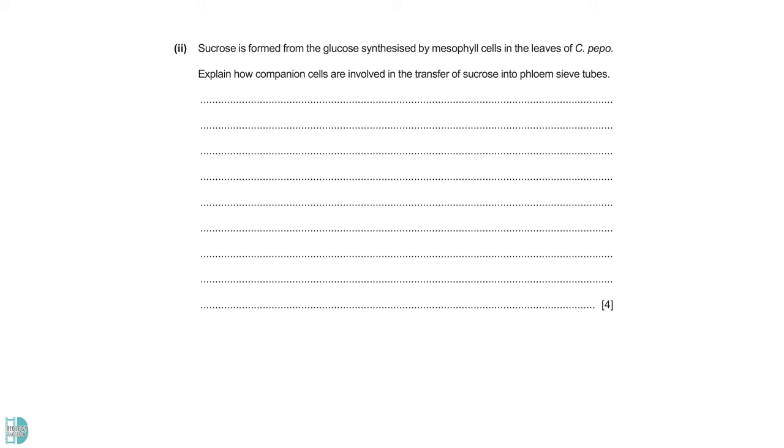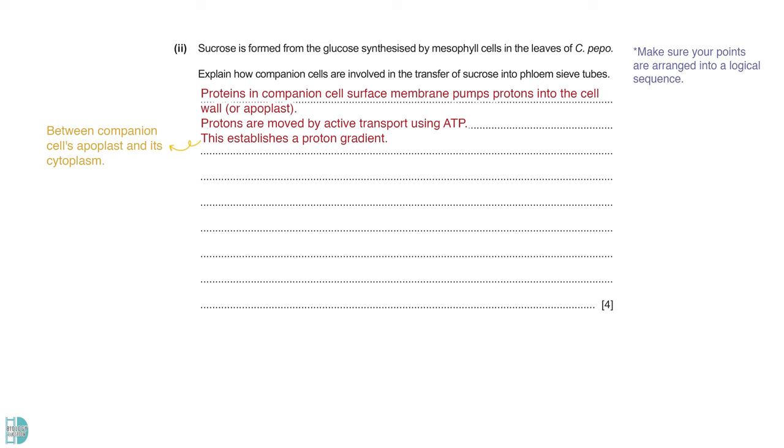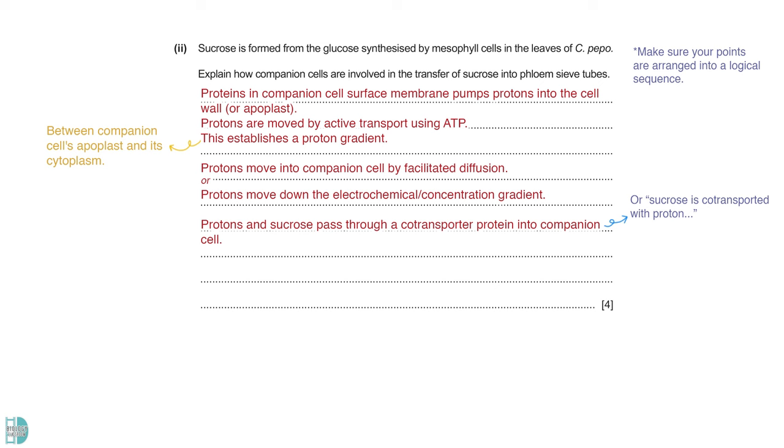Question 2. Explain how companion cells are involved in the transfer of sucrose into phloem sieve tubes. You need to explain how the loading of sucrose takes place with the help of the companion cell. Make sure the points are arranged in a correct sequence. Protons are actively transported out of the companion cells into the apoplast. This step requires ATP as it is active transport. It will establish a proton gradient between the companion cells, apoplast and cytoplasm. Due to the concentration or electrochemical gradient, protons move into companion cells by facilitated diffusion. Sucrose is co-transported when protons pass through the co-transporter protein into the companion cell. Sucrose moves against its concentration gradient. Then, sucrose concentration increases in the companion cell, leading to its diffusion into the phloem sieve tube through plasmodesmata.